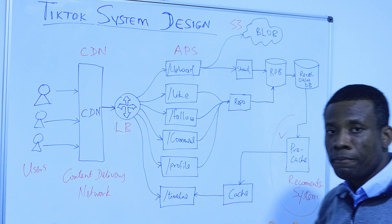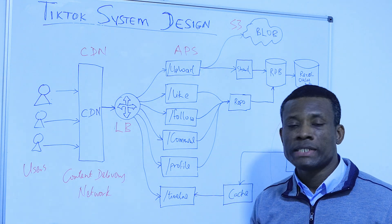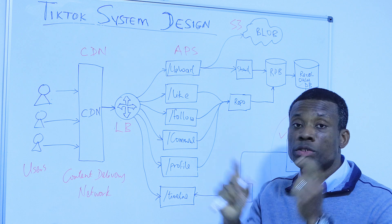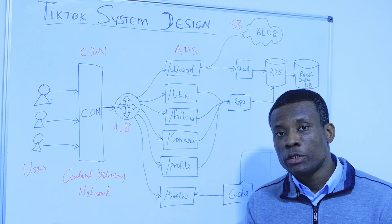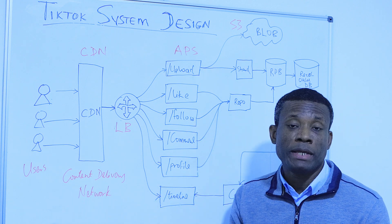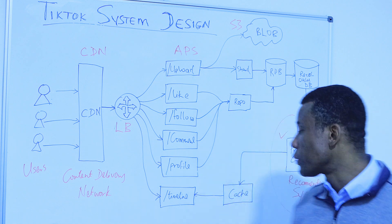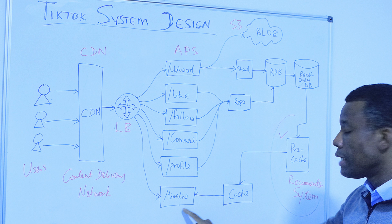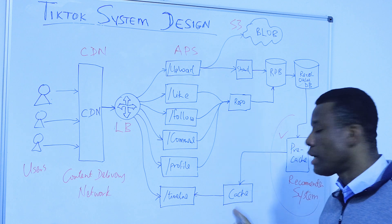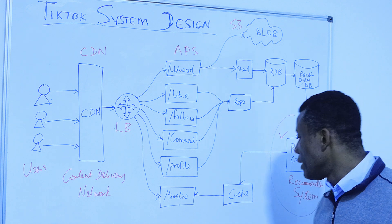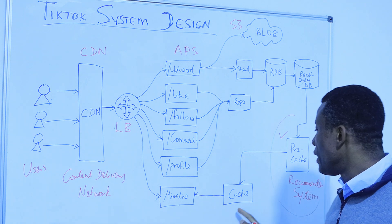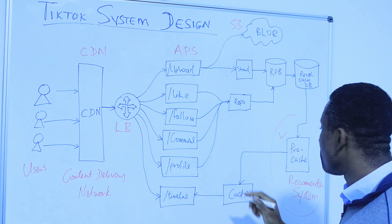The recommender system takes user information — maybe the location, age, gender, and a whole lot of metadata about the user — as well as the users that the user follows, and then recommends videos for that user. To run this expensive algorithm, we don't want to run it every time a user logs in. That's why we pre-cache this timeline information — maybe the first 20 videos to be shown to the user — placed in this cache. There are a number of caching technologies, for instance Redis, that you can mention in your interview.